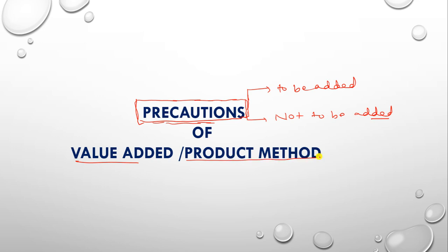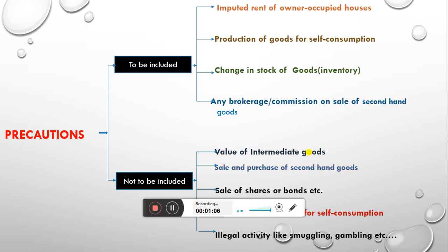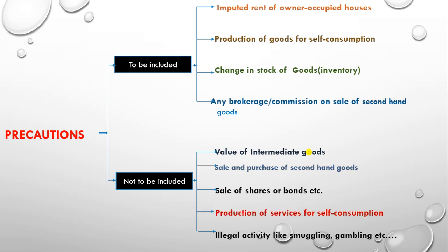Now on your screen, you can see the precautions. I have divided the precautions into two parts: items that are to be included in national income, and items that are not to be included. Let's first look at which items are to be included.